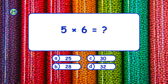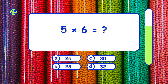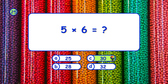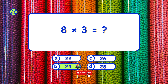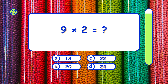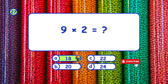What is 5 times 6? It's B, 30. What is 9 times 2? It's A, 18.